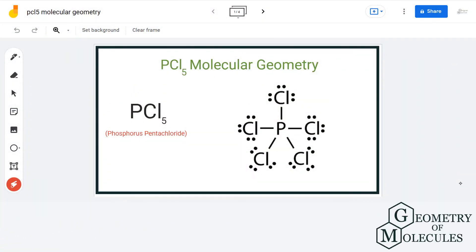Hello guys, welcome back to our channel. In this video, we are going to help you determine the molecular geometry of PCl5 molecule, also known as phosphorus pentachloride. To understand its molecular geometry, we are first going to look at its Lewis structure.